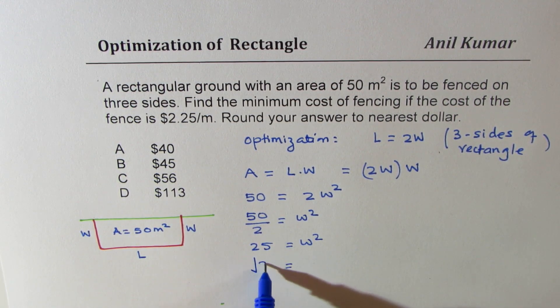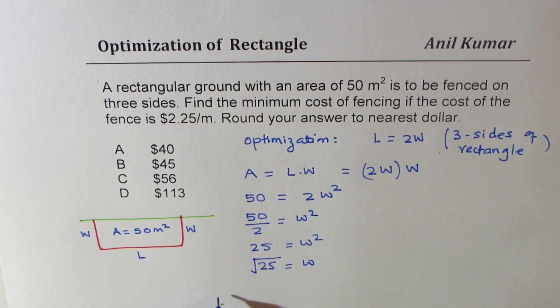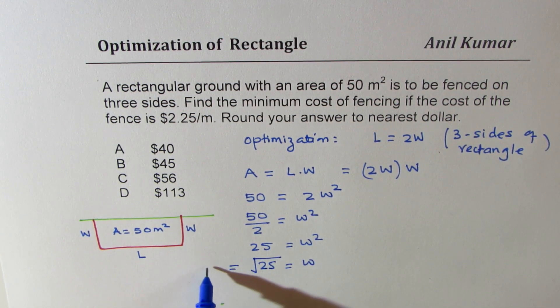So the square root of 25 gives us the width of this rectangle, which is five units. Five meters in this case.